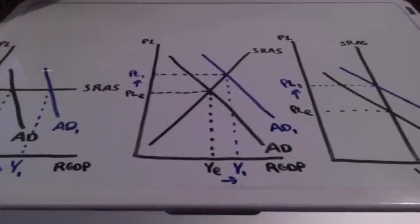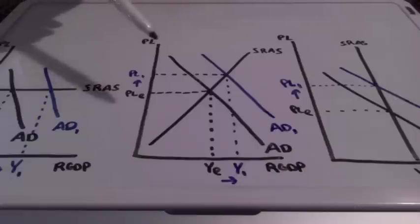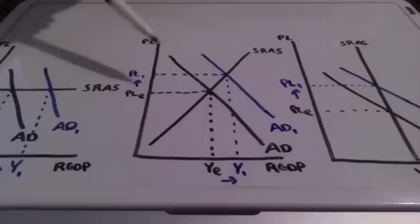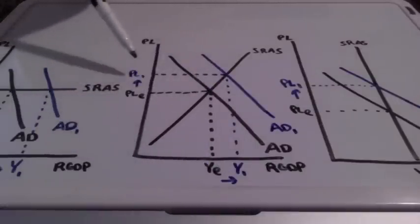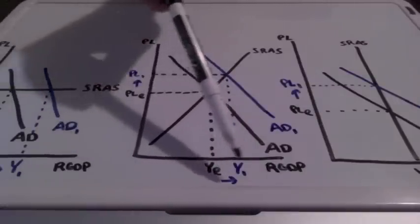For our relatively elastic supply curve, when we have an increase in aggregate demand both price level and GDP are going to increase to price level 1 and Y1.